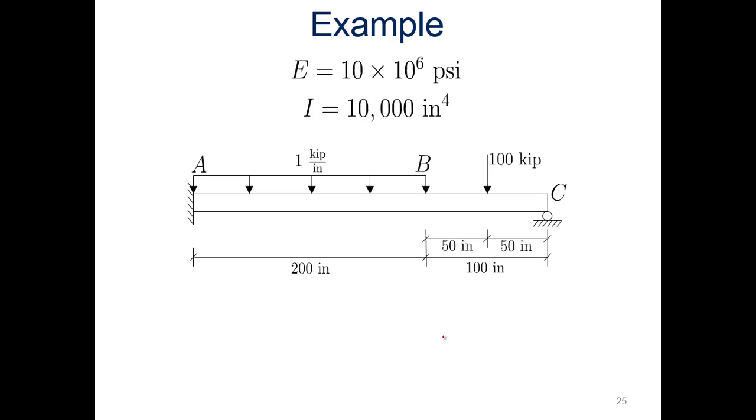All right, so let's do this as an example. We got the modulus is 10 times 10 to the sixth PSI, and the moment of inertia of 10,000 inches to the fourth power. One kip per inch from points A to B, and we got 100 kips applied right at the middle between B and C, 50 inches at the center there versus 100 inches across and 200 inches here between A and B.